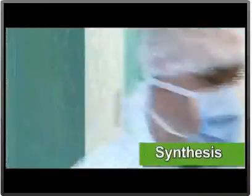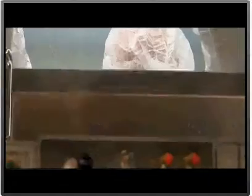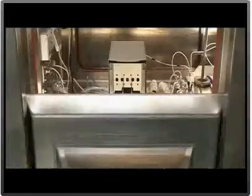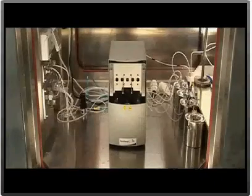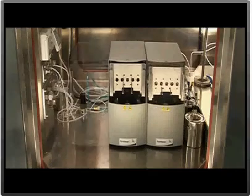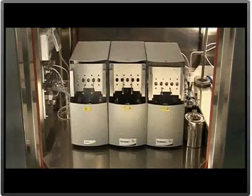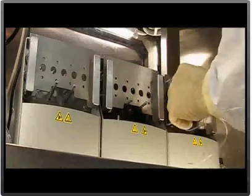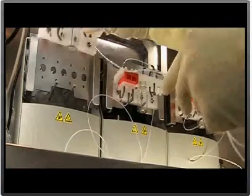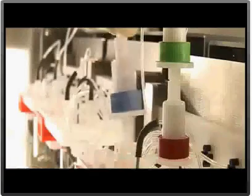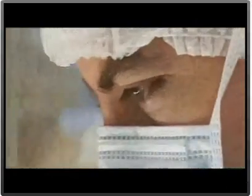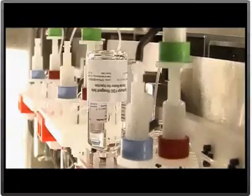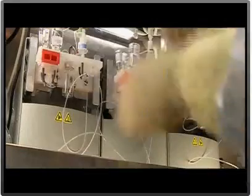The synthesis is performed by fully automated chemistry modules, or Synthera. The main benefit of the Synthera is its compactness. Multiple modules are usually needed to accommodate the increasing FDG demand and production reliability. Whereas traditional modules require extra hot cells and space, the IBA modules allow our site to operate up to 3 of them in a single cell, therefore allowing superior backup capabilities.